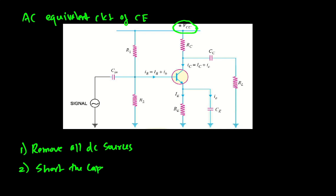Shorting the capacitors is the next step. When we remove VCC, RC will be at a potential of zero, meaning it should be grounded. R1 is also at a potential zero, so it should also be grounded. We have to short the input capacitor Cin — that means we connect a wire in its place and remove the capacitor. Similarly, we remove capacitor CE and short that terminal, meaning there is no current flowing through RE.